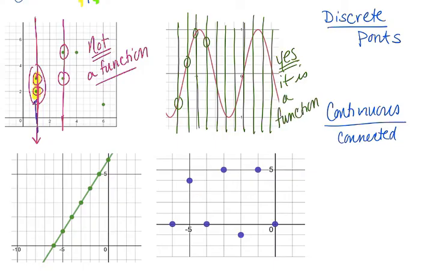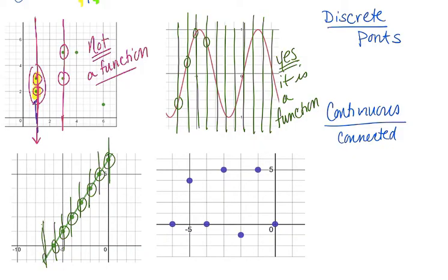The next graph looks like a line drawn through several points and is continuous. Drawing a vertical line, I only ever get one hit — whether through specific plotted points or in between. You still only get one output for each input. This is the vertical line test, and this graph is also a function.